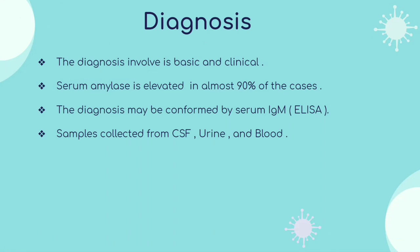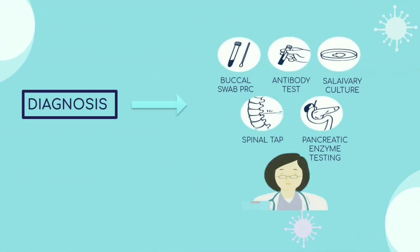Moving to diagnosis: The diagnosis is basic and clinical. Serum amylase is elevated in almost 90% of cases. The diagnosis may be confirmed by serum IgM ELISA, which is also used to diagnose other viral infections. Samples are collected from CSF, urine and blood. Diagnostic methods include: buccal swab PCR, antibody tests, salivary culture, pancreatic enzyme testing and spinal tap.